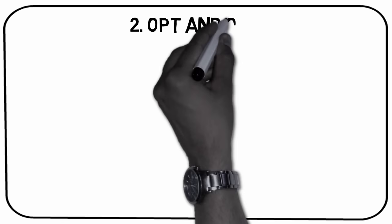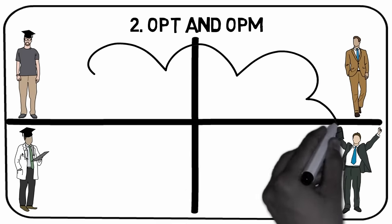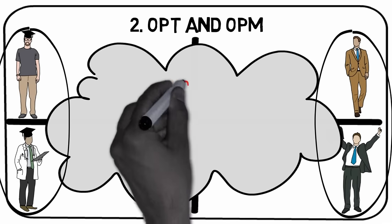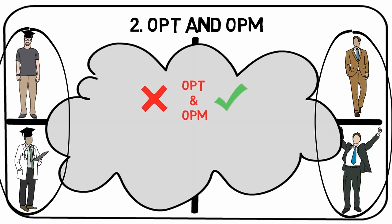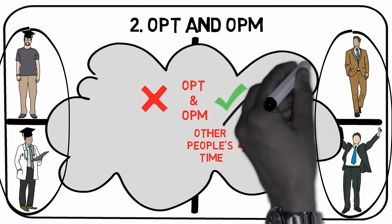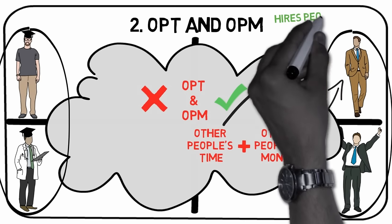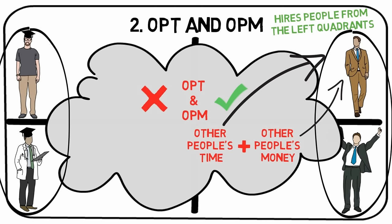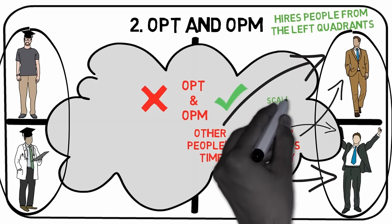Takeaway number 2: OPT and OPM. The number one difference between the left side of the cash flow quadrant and the right side is OPT and OPM. OPT stands for other people's time, and OPM for other people's money. A person from the B quadrant uses OPT and OPM when designing a business system, where he can hire people from the E and S quadrants, while using money from people of the I quadrant. Typically he also invests a lot of his own time to kickstart the business, but in the long run this is not essential, and becoming a more passive owner is possible. A person from the I quadrant uses OPT to generate income from his money alone, and if skilled enough, he can apply other people's money as well as his own to scale his investment profits.